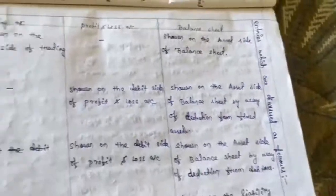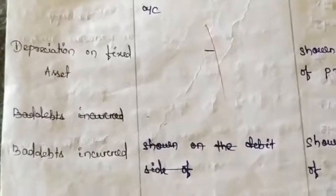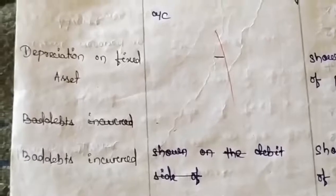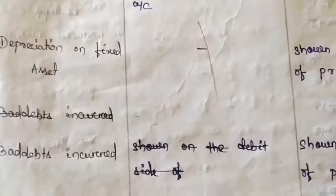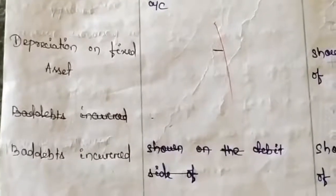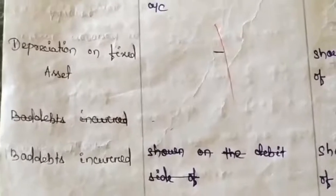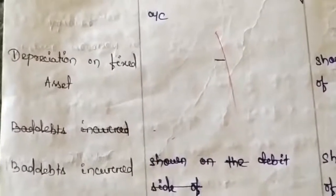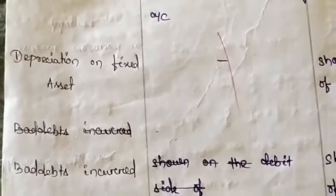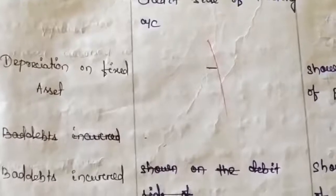Moving on to bad debts incurred. Bad debts are losses that cannot be recovered. When given as an adjustment, two treatments are required. The journal entry is: bad debt account debited to debtors account. Being a loss, the first treatment is it is shown on the debit side of the profit and loss account. Since bad debt decreases the value of debtors, the second treatment is it is shown on the asset side of the balance sheet by way of deduction from debtors, under current assets.